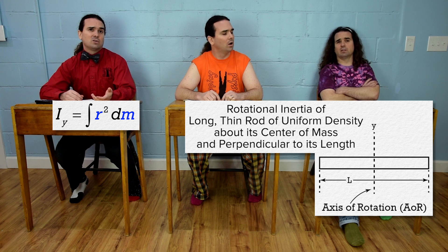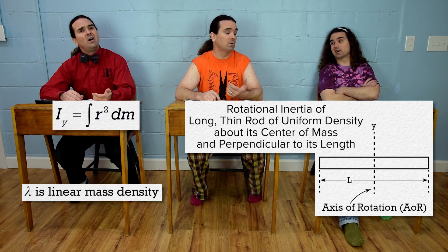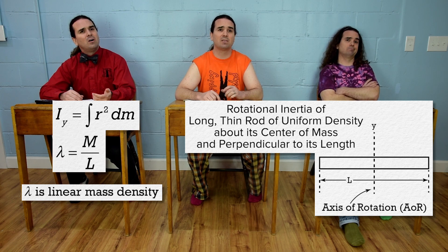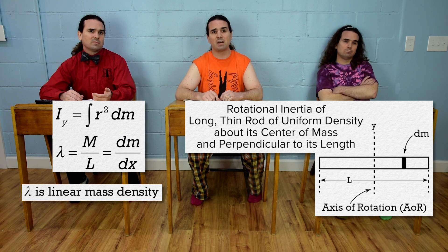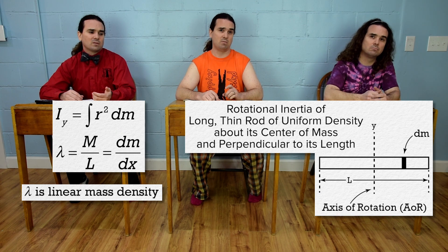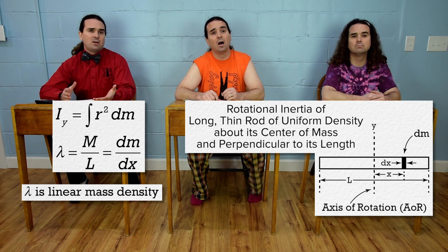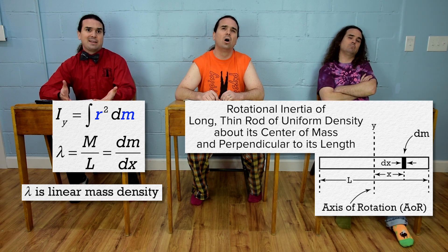Try starting with lambda, the linear mass density — it is constant for a uniform rod. Linear mass density equals the total mass of the rod divided by the total length of the rod, but it also equals the mass of the infinitesimally small piece of the rod, dm, divided by the length of that infinitesimally small piece in the x-direction, which is dx. That all makes sense, but I still do not get how we integrate r with respect to mass.